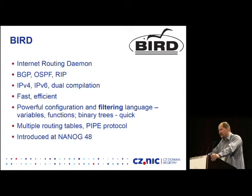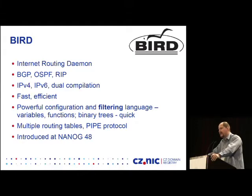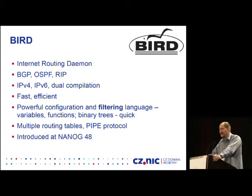Another difference from other projects is that we support multiple routing tables. You may have more than one routing table, and every protocol instance can be connected to a different one. If your operating system supports multiple forwarding tables, you can synchronize those together, but you don't have to — you can just keep it as a routing information base not propagated anywhere. This daemon can act as multiple routers, route reflectors, and so on in a single binary. There is also the pipe protocol — not a real routing protocol, but a synchronization mechanism to connect two routing tables and do filtering between them. I introduced this project at NANOG 48, so if you're interested, look there for more details.